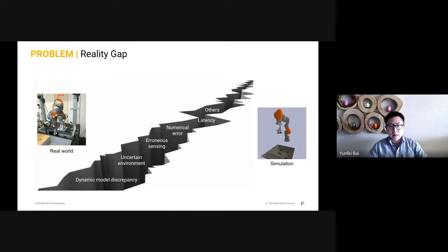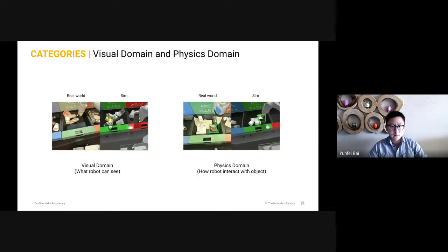The reality gap is the discrepancy of what can be achieved in sim and in the real world. It is caused by many factors, such as dynamic model discrepancy and uncertain environment. The reality gap can be classified into visual domain and physics domain. Visual here means what the robot camera sees. You can clearly see the visual look difference between the real robot camera image and the rendered camera image. The other category is the physics domain gap. For example, the object dynamics is hard to simulate, especially if it is deformable like the chip bag, and that also leads to grasping behavior difference.